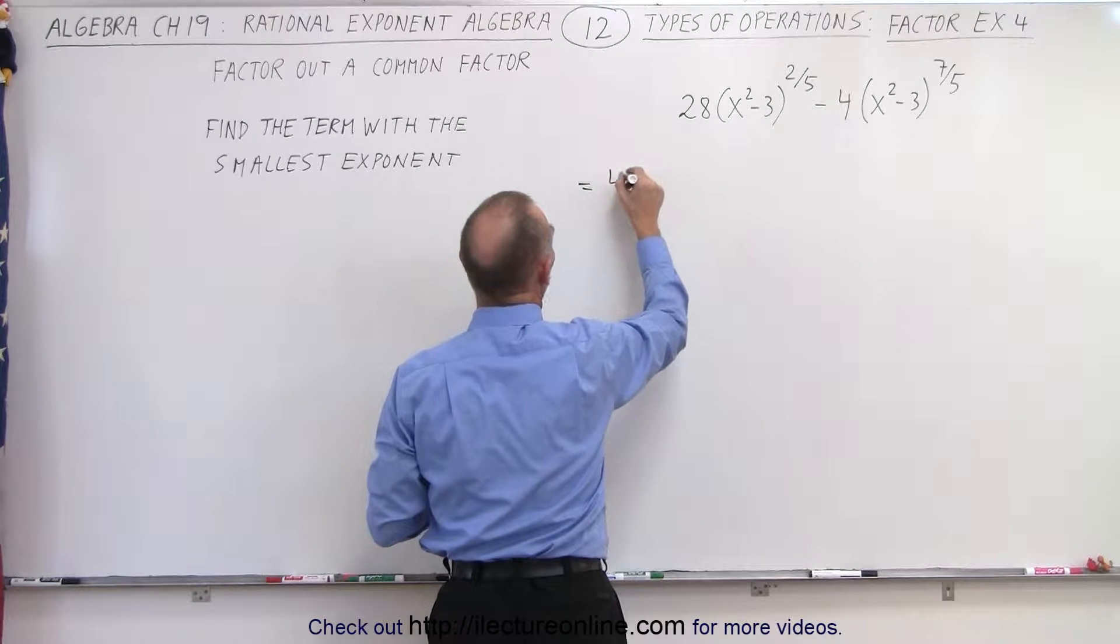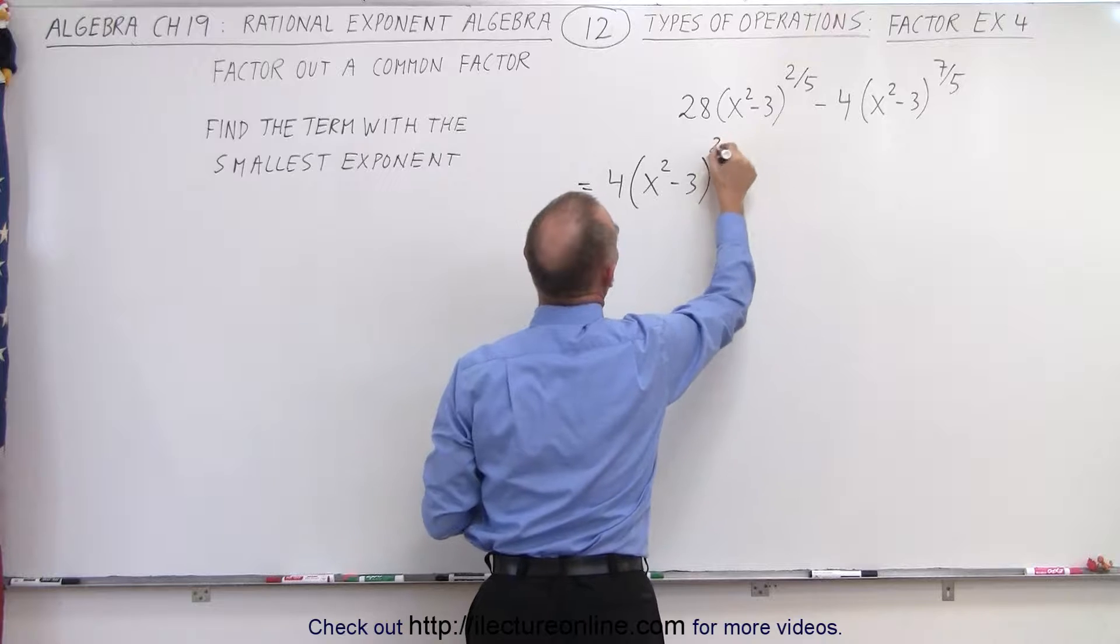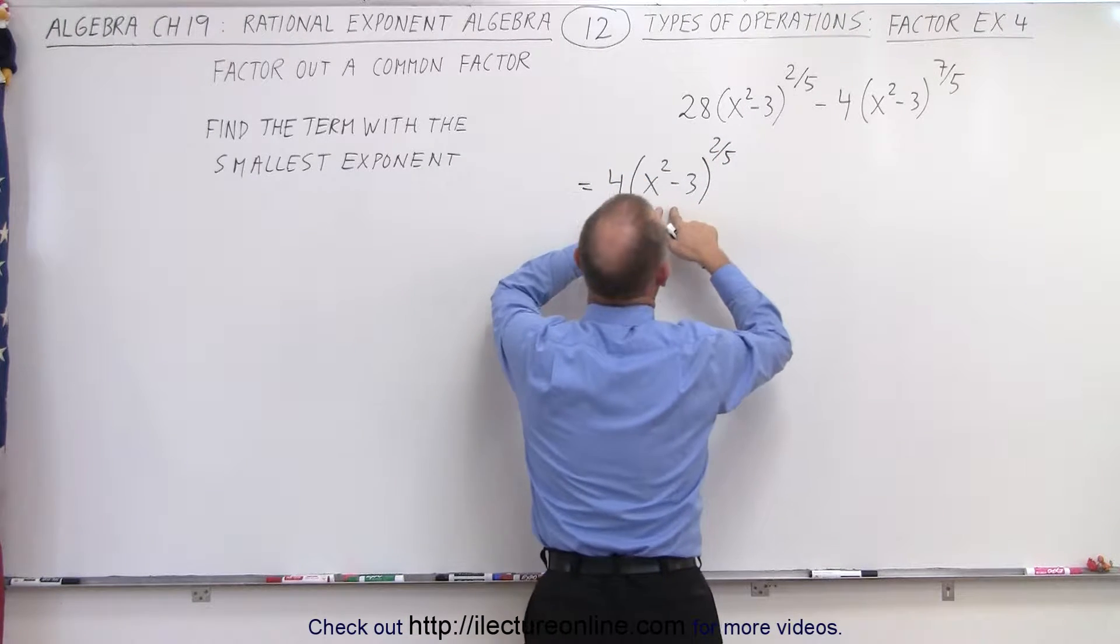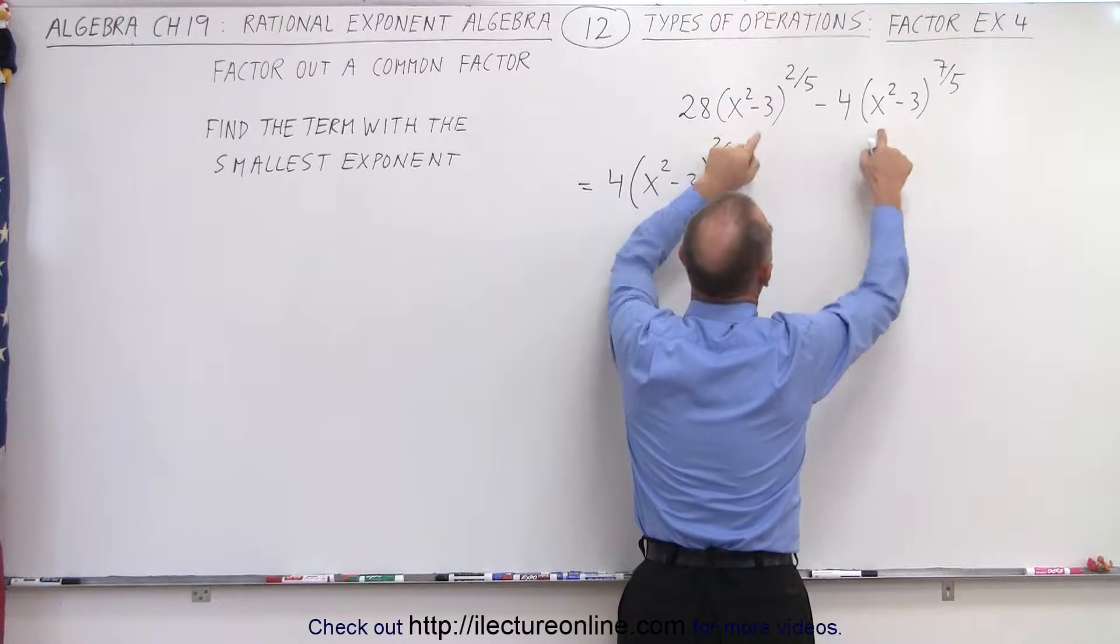So this can now be written as 4 times x squared minus 3 to the 2 fifths power. So 4 is a common factor between these two. And x squared minus 3 to the 2 fifths power is a common factor between these two.